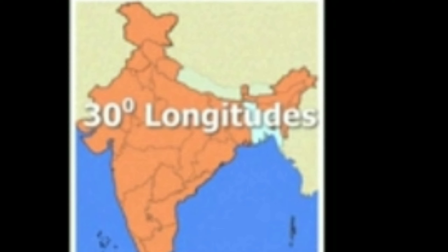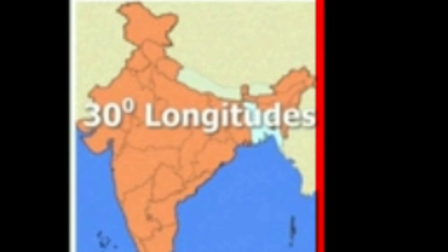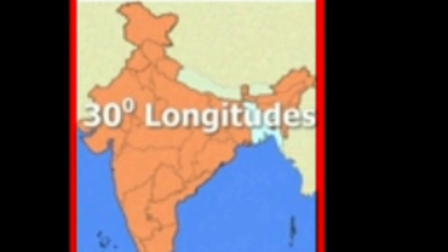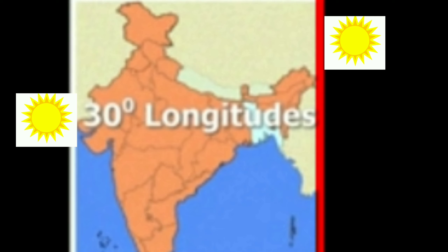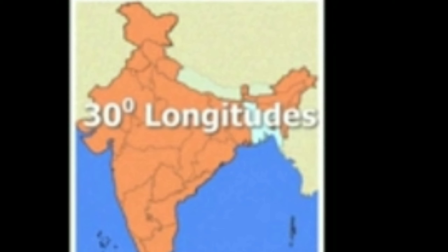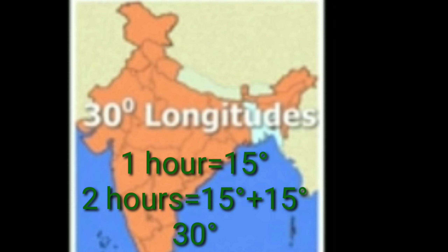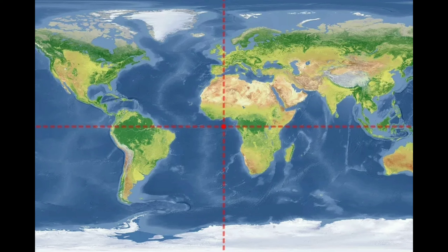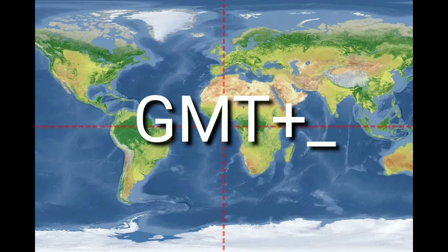If we move towards the east, we gain 1 hour at each longitude, and if we move towards the west, we lose 1 hour at each longitude. For example, the longitudinal extent of India is approximately 30 degrees — from Arunachal Pradesh in the east to Gujarat in the west. Since the sun rises in the east, if sunrise is at 6 a.m. in Arunachal Pradesh, people in Gujarat will see sunrise 2 hours later.